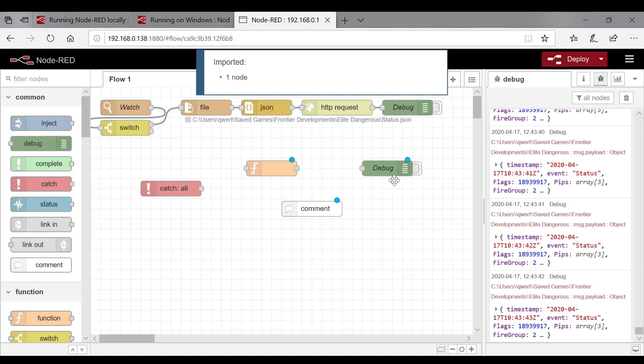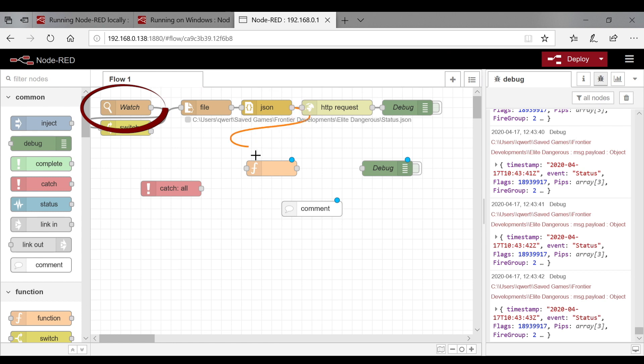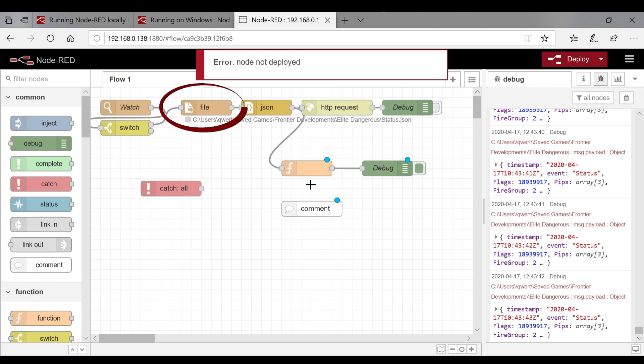For this I installed Node-RED. It's a server that runs on Node.js, and have a web interface where I can connect nodes to each other to create flows and information. In the top left you can see a watch node. That one watches for changes in a folder. If the file that changed is the status file that I'm looking for, it reads the file contents, and sends that content as a payload to the next node.